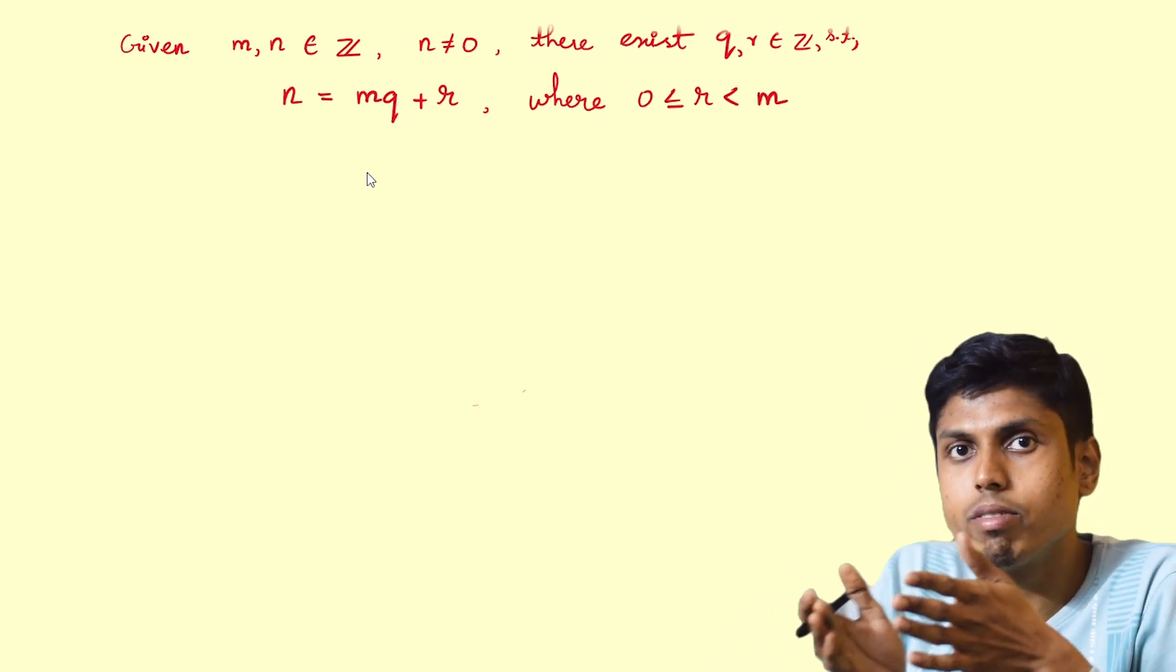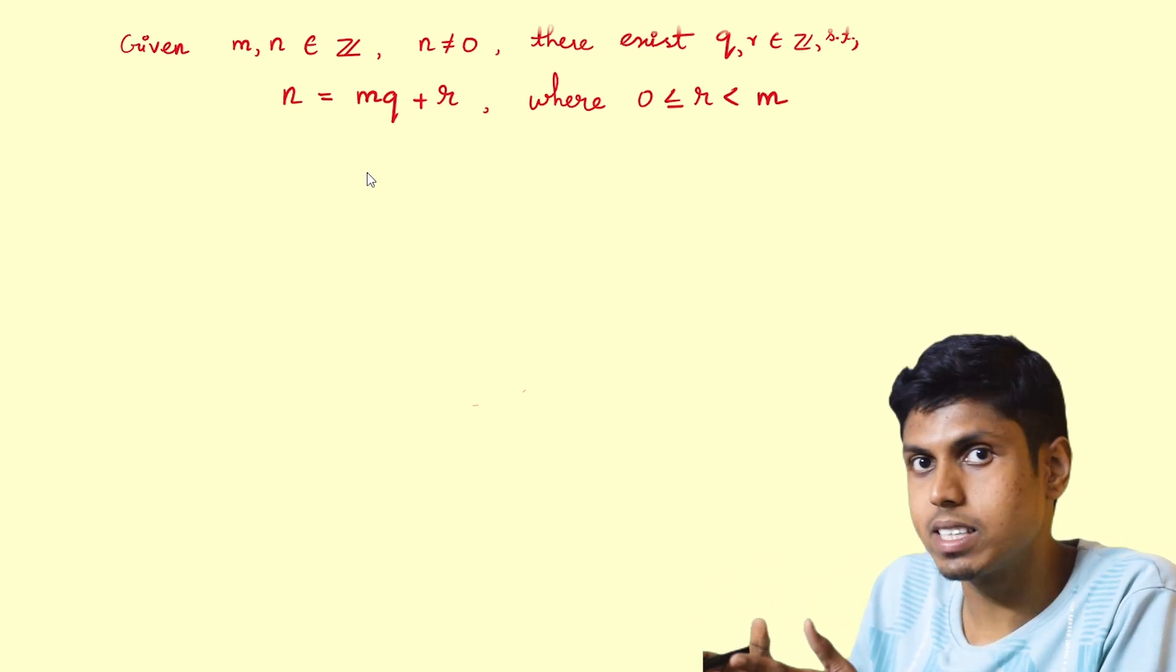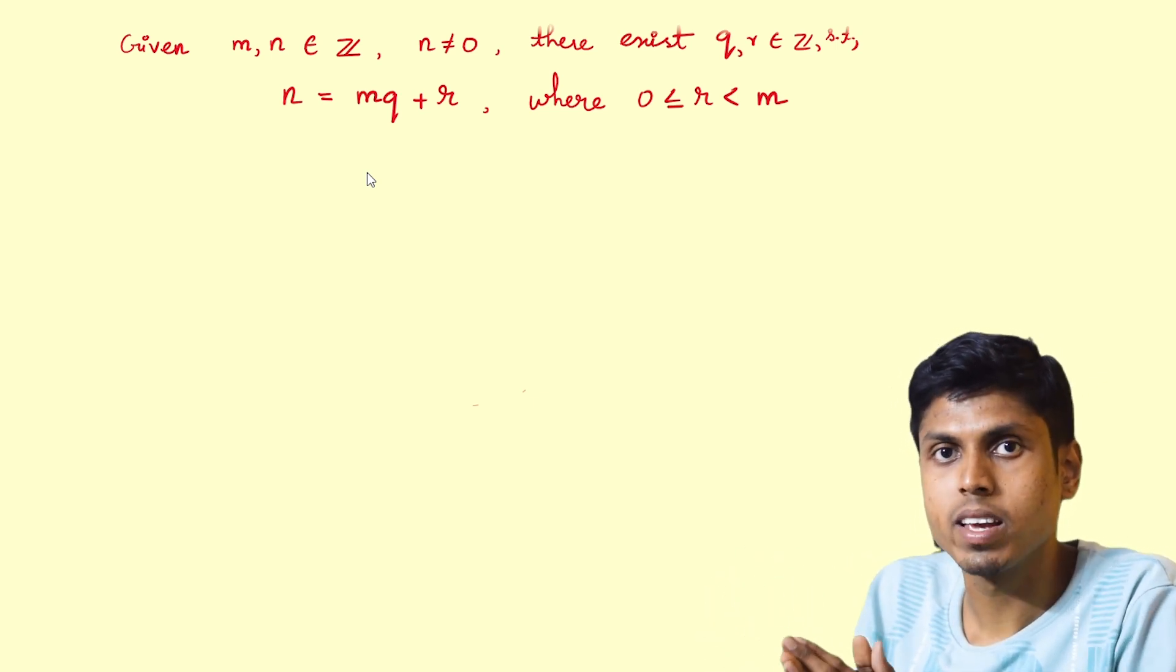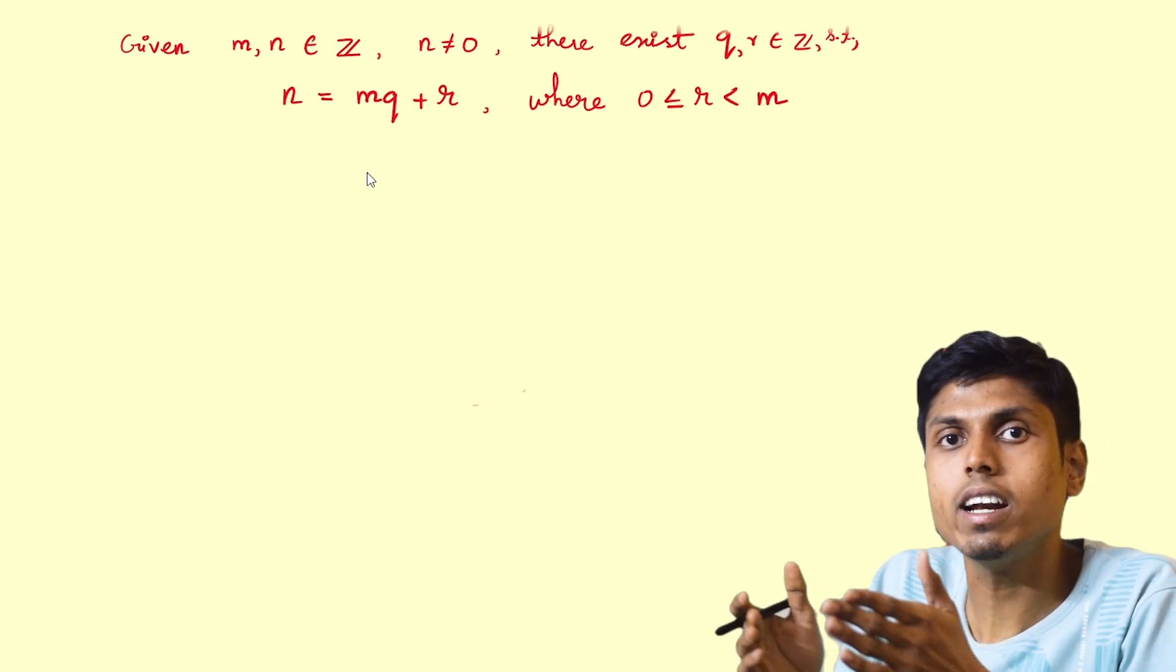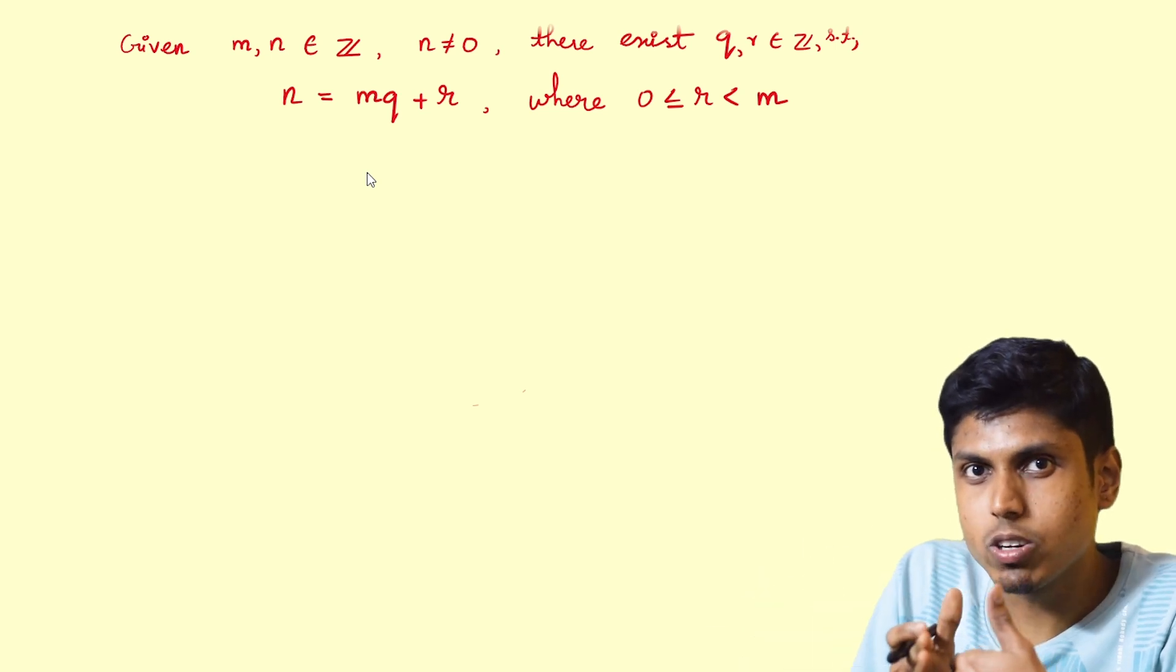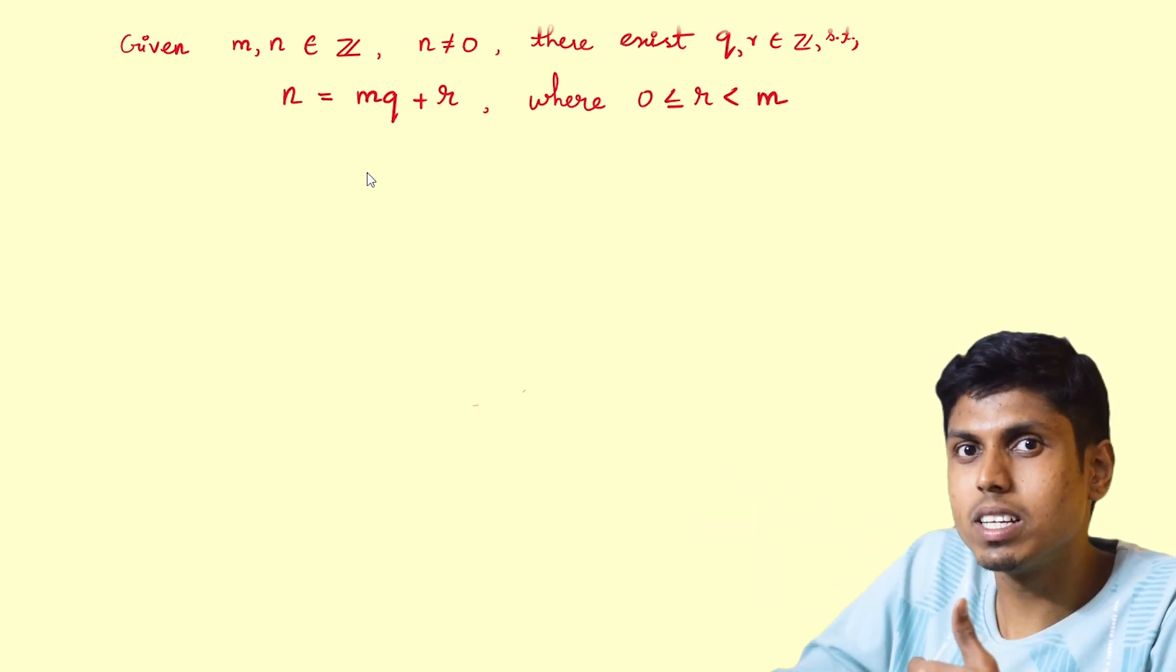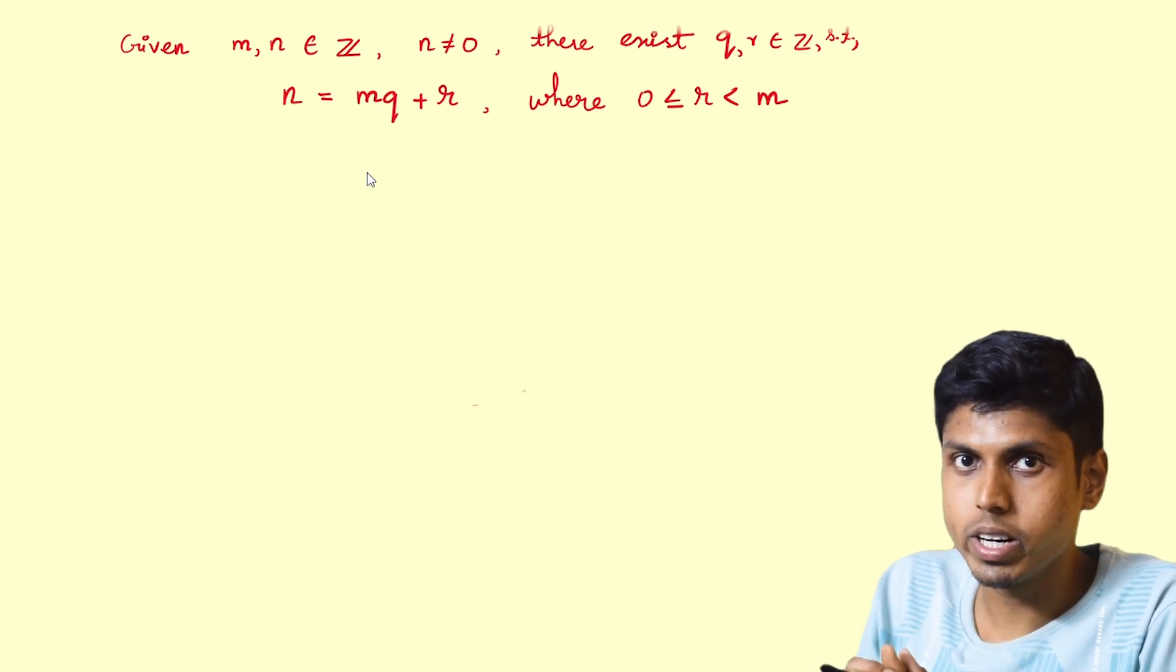This is nothing but if you divide a number by some other number, let's say m as the divisor and n as the dividend, so q and r will be the quotient and remainder for that division respectively, where the remainder ranges from zero to the number less than divisor. We will be using this extensively in Euclidean algorithm.